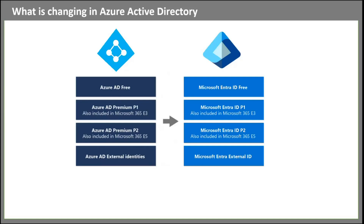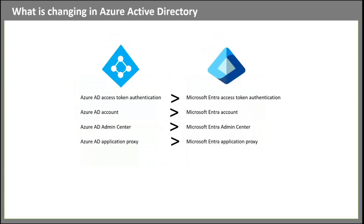Apart from these changes, you will also find a few other changes in the display name of features. For example, Azure AD access token authentication will be called Microsoft Entra access token authentication. Azure AD account will be called Microsoft Entra account. Azure AD admin center will be called Microsoft Entra admin center. Azure AD application proxy will be called Microsoft Entra application proxy, and so on. You can find the article link in the description of this video.